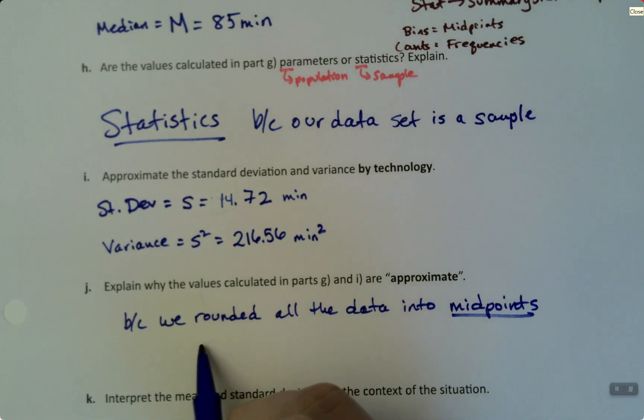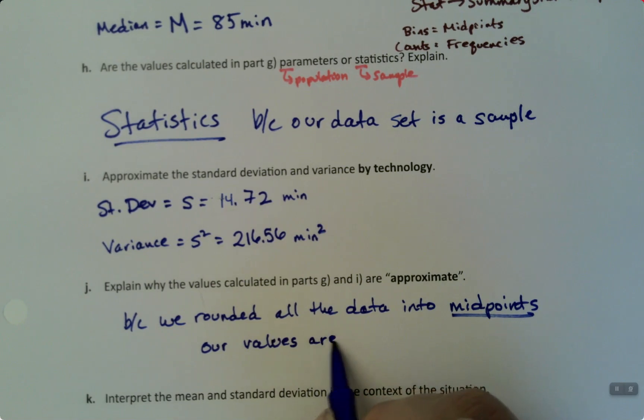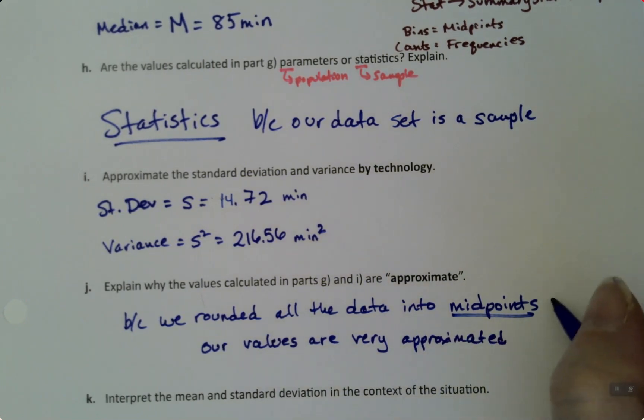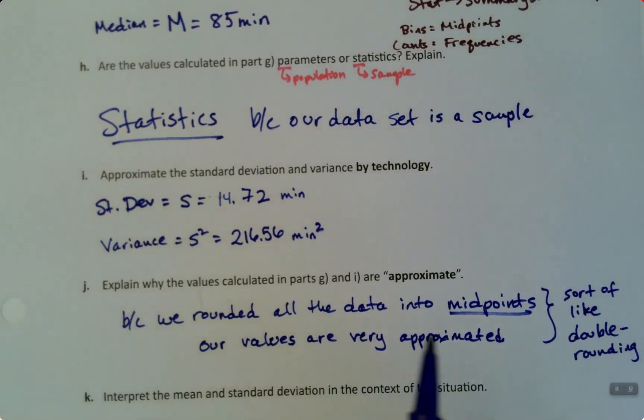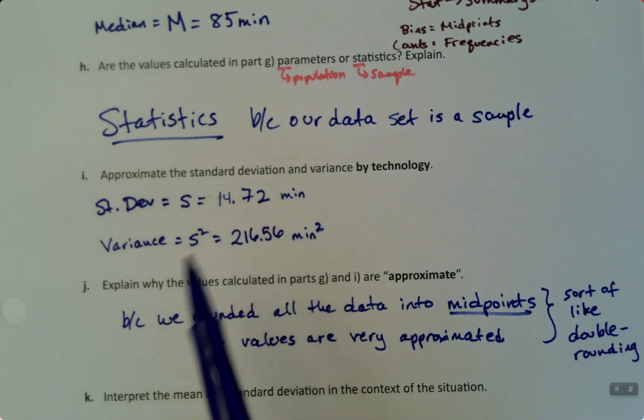Our values are very approximated. It's kind of like you're doing double rounding. Kind of even triple rounding. So you round your results of course, but you also rounded them into the midpoints, and then you rounded them extra bits down here when you rounded two decimal places or whatever. So you're doing extra amounts of rounding, which makes it extra approximate. If you will, I don't think that's a word, but I'm going with it.